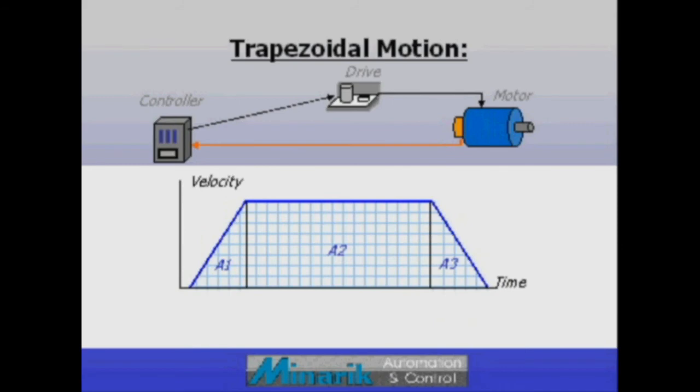The convenient part about using trapezoidal profiles is the math behind them. The area under the trapezoid can be easily calculated and represents the total distance moved.